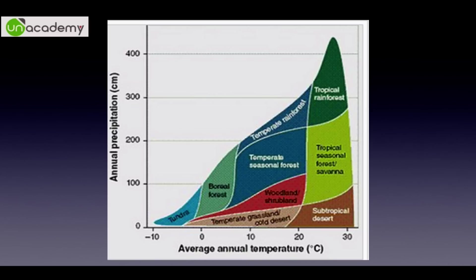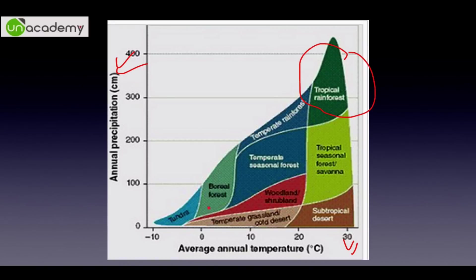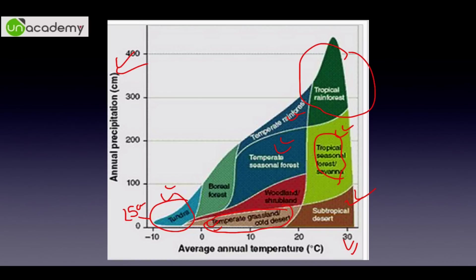As precipitation and temperature increase, you get tropical rainforest. As both decrease, you get desert. As temperature approaches zero, you get cold desert; further minus gives you tundra, which has slightly more precipitation. If precipitation is less than 25 cm annually it is a desert. Then you have temperate forest, temperate rainforest, tropical seasonal forest — also called savanna or tropical grasslands — and shrubland.